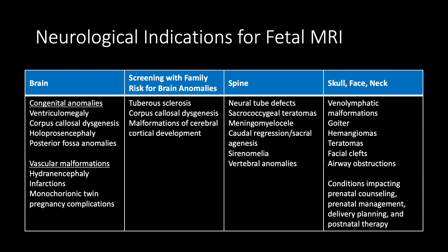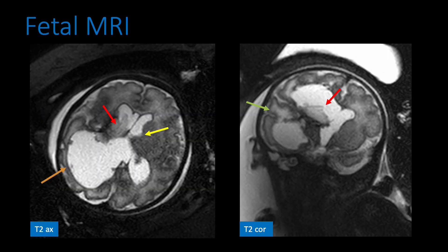Neurological indications for fetal MRI are by far the most extensive and most common. Congenital anomalies, vascular malformations, neural tube defects, and conditions impacting prenatal counseling and management can be evaluated in addition to intracranial hemorrhage.